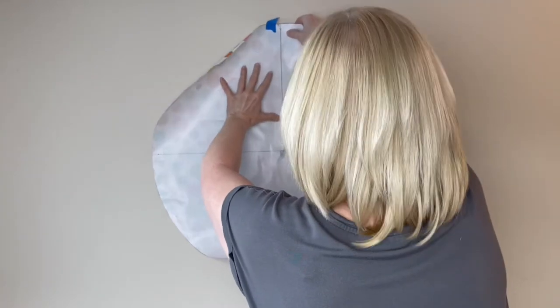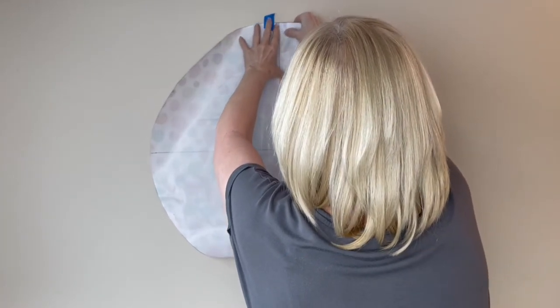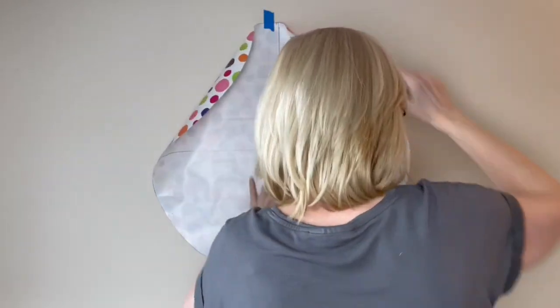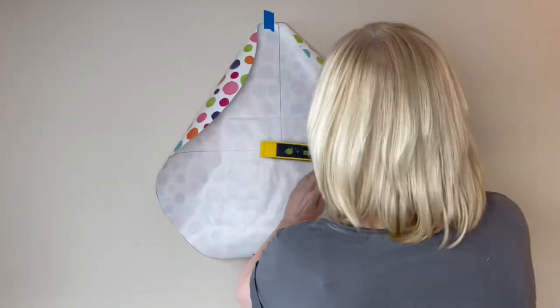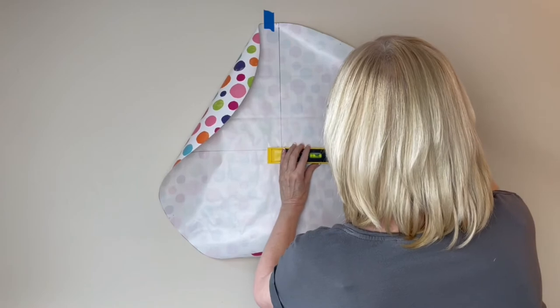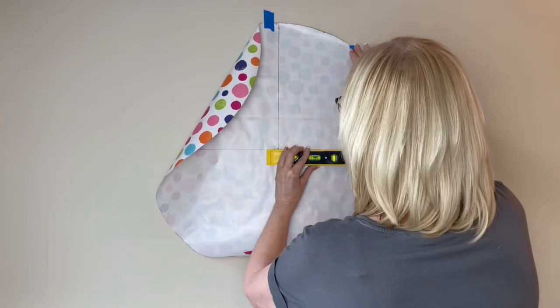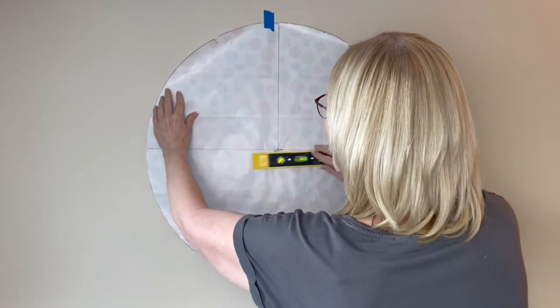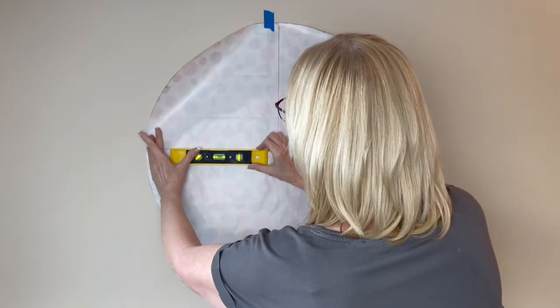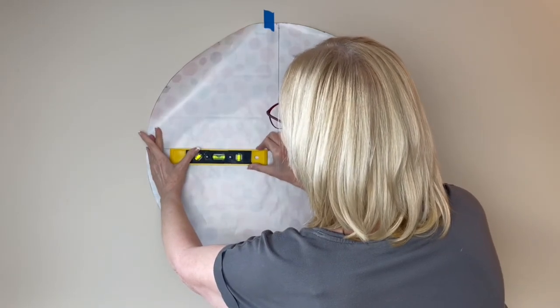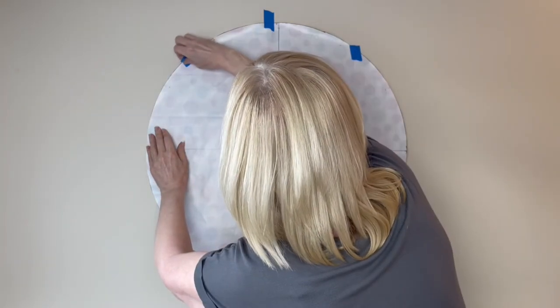Place the top of your template on the wall. Now using a level on that middle line, make sure that it's absolutely level before you put any more tape on. Secure it all the way around.